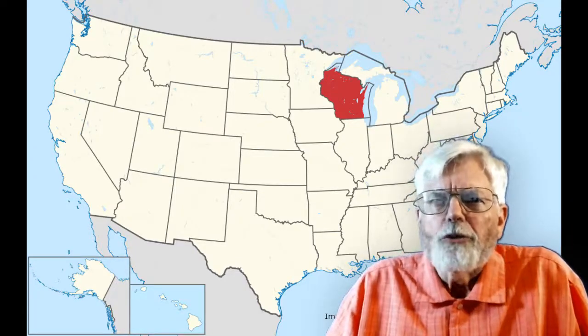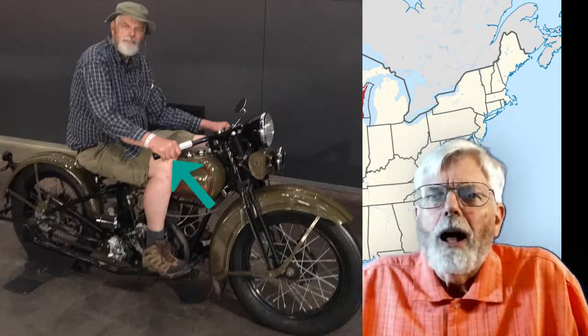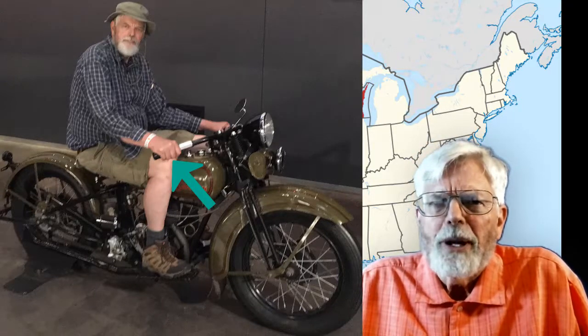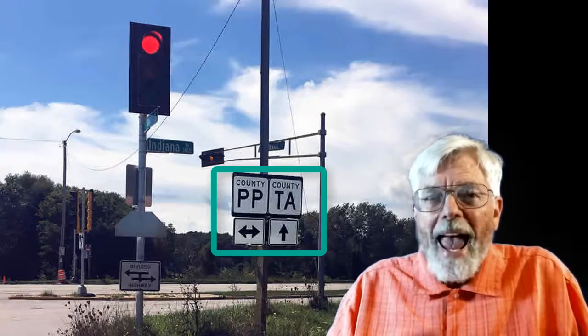I went to visit my college roommate in Wisconsin and we took a trip to the Harley-Davidson Museum. That's me, sitting on a Harley in the museum. I wasn't worried about skinning my knees because the bike was bolted to the floor. I couldn't help taking a picture of this road sign. The county roads were identified by one or two characters. Check it out. Here's the intersection of roads PP and TA.